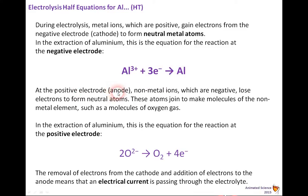Now, at the positive electrode anode, metal or non-metal ions, which are negative, lose electrons to form neutral atoms. These atoms join to make molecules of the non-metal element, such as molecules of oxygen gas. And the extraction of aluminium, this is the equation for the reaction at a positive electrode.